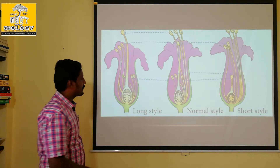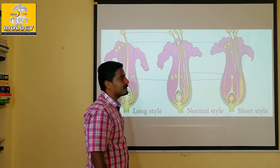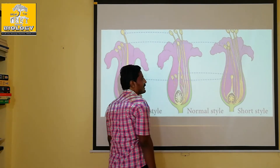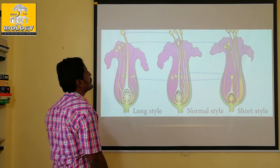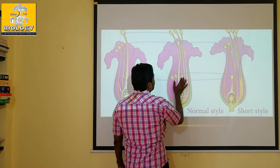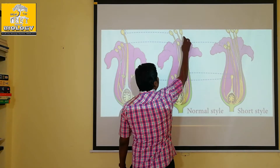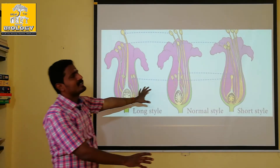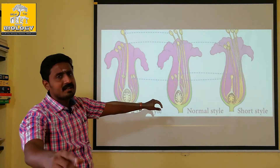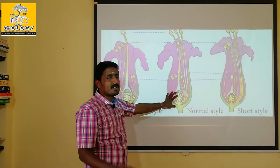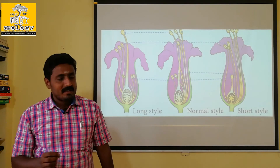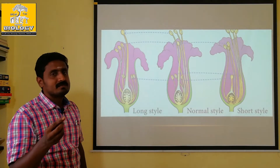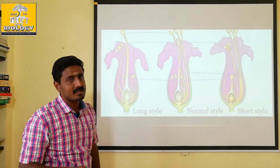Let's look at the first type: the normal type. This normal type has a stigma and an anther. This is a normal plant — a self-pollination plant. It's a normal style.